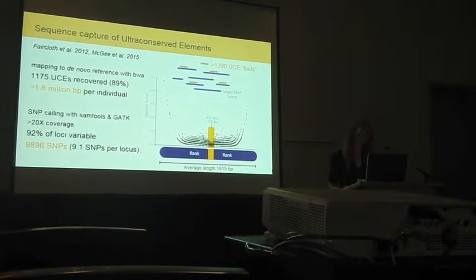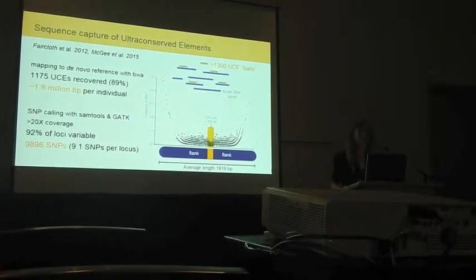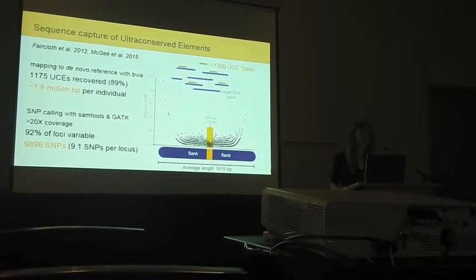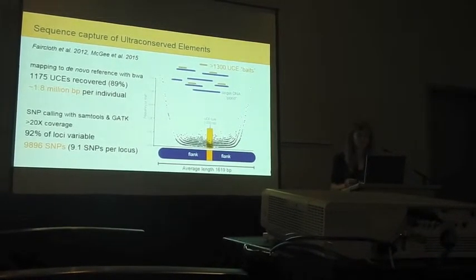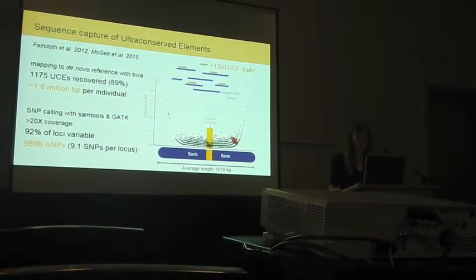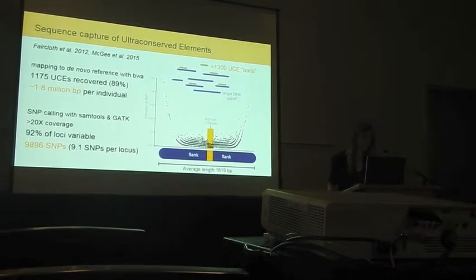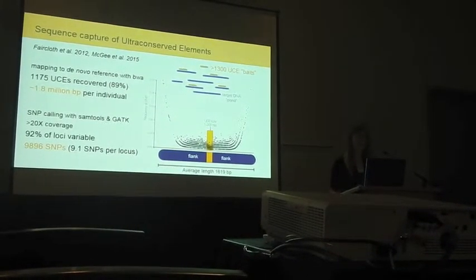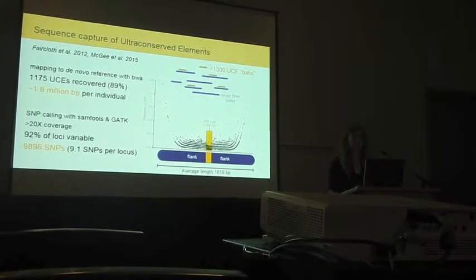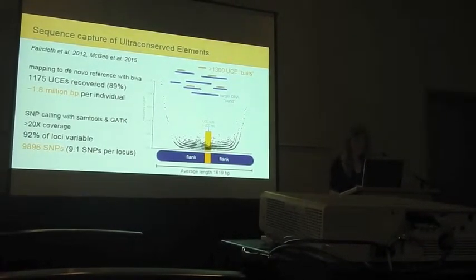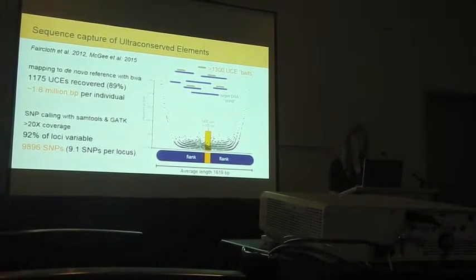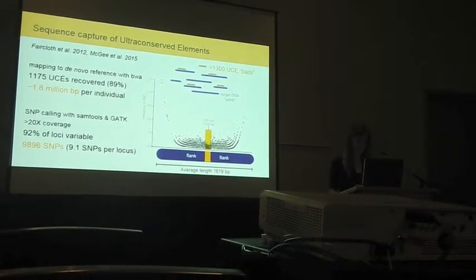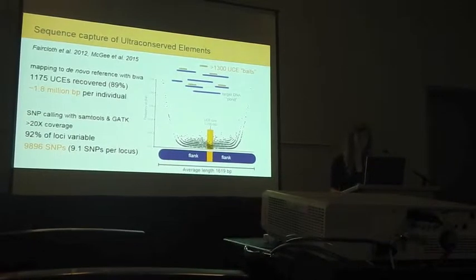We were initially a little concerned that ultra-conserved elements may not provide sufficient resolution for interspecific patterns, because they are by design ultra-conserved. But we saw that the frequency of SNPs increases rapidly when moving away from the ultra-conserved core. We ended up with a matrix of almost 10,000 SNPs across all individuals, with on average 9 SNPs per UCE locus. For the majority of our analyses I selected a single SNP per UCE locus to account for linkage among these SNPs, but in other cases we were able to use the full sequence information.